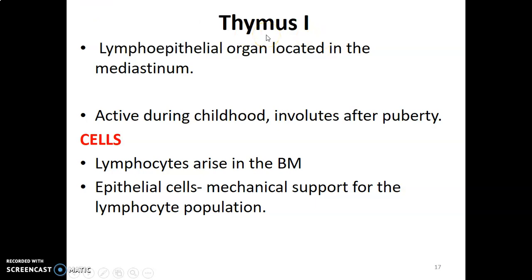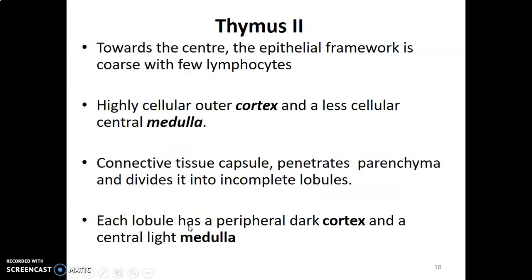The thymus is a lymphoid epithelial organ located in the anterior mediastinum. It is active during childhood, then at puberty it undergoes involution. T cells arise in the bone marrow and migrate into the thymus for maturation. The thymus is highly cellular in the outer cortex and less cellular in the medulla. The cortex is dark because it is highly cellular, while the medulla is lighter with fewer lymphocytes.